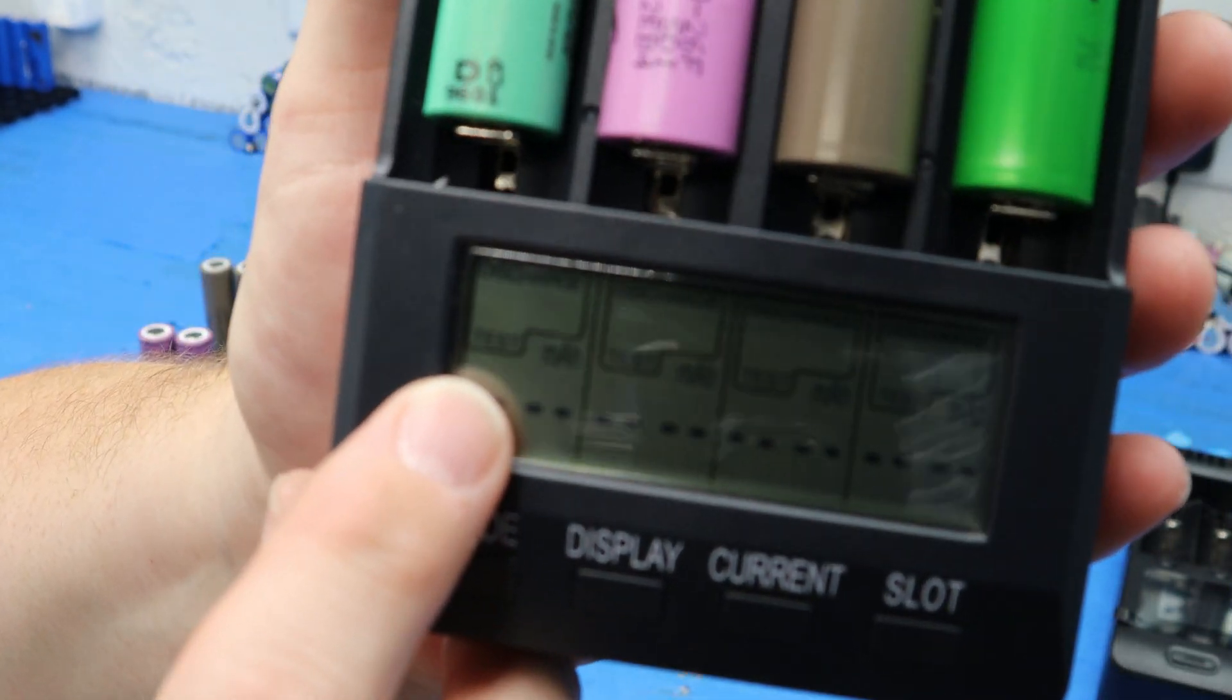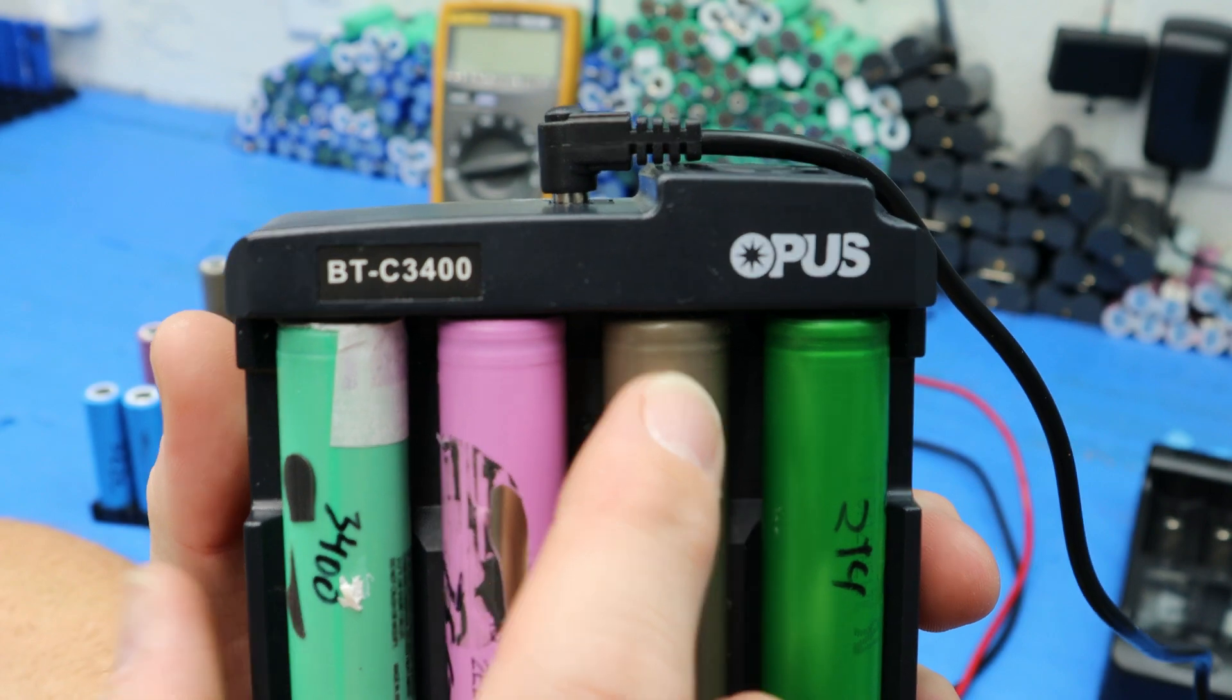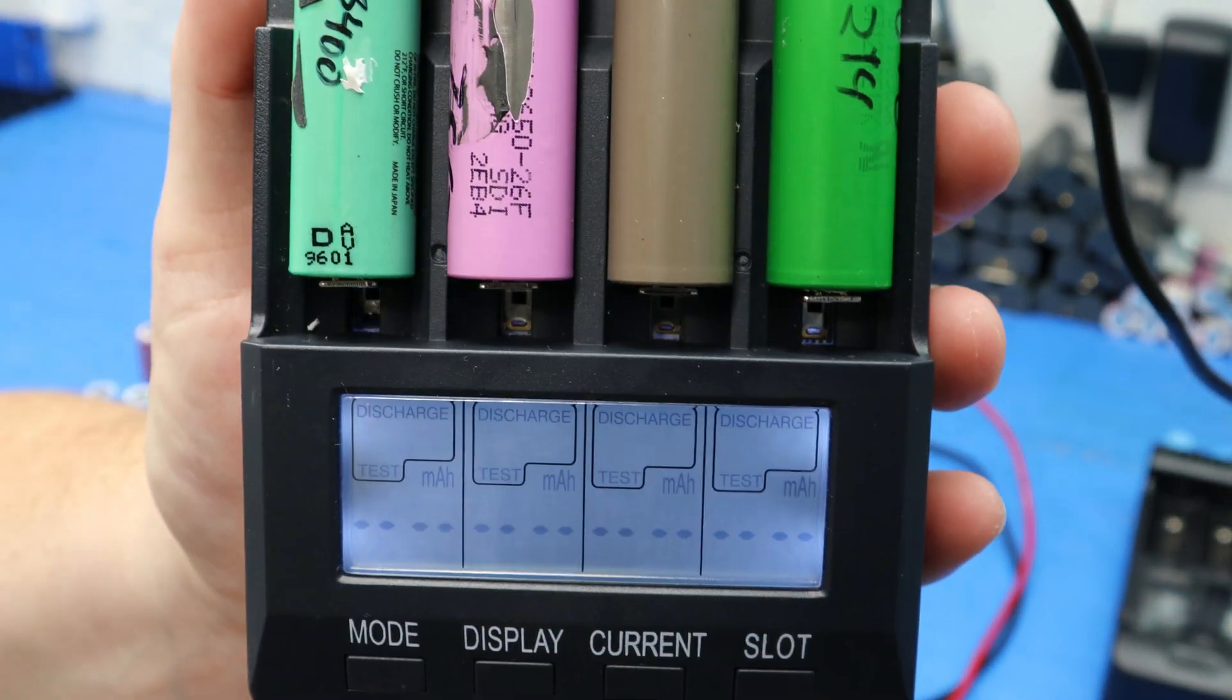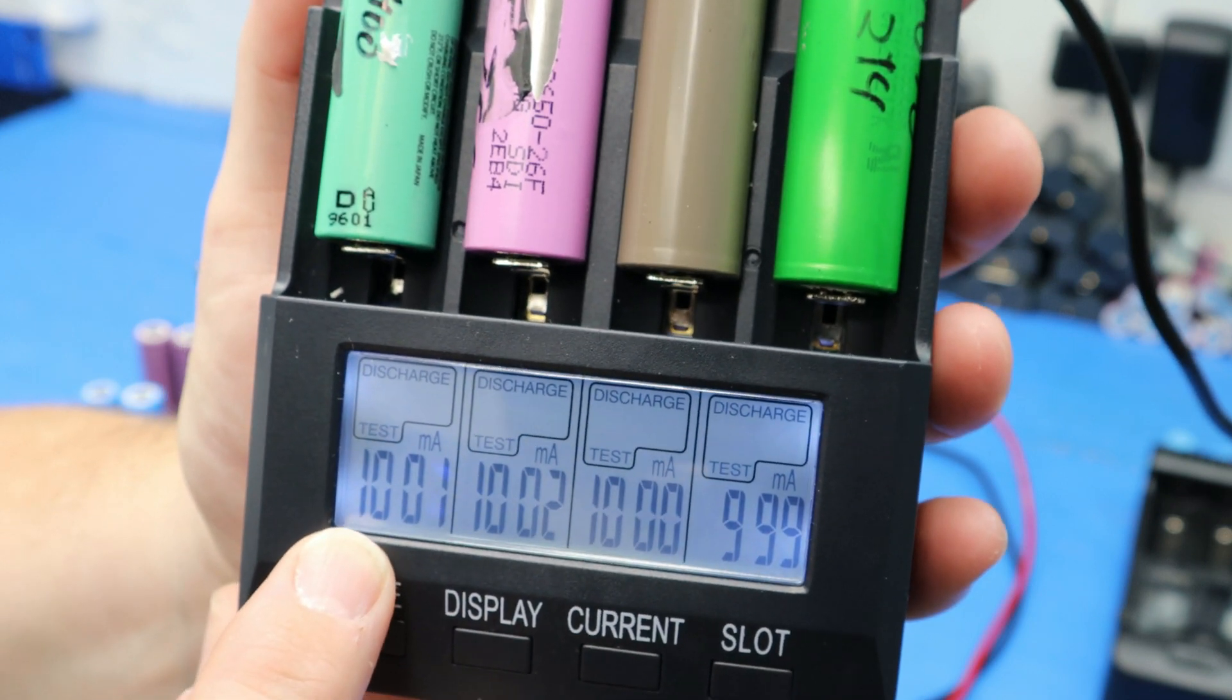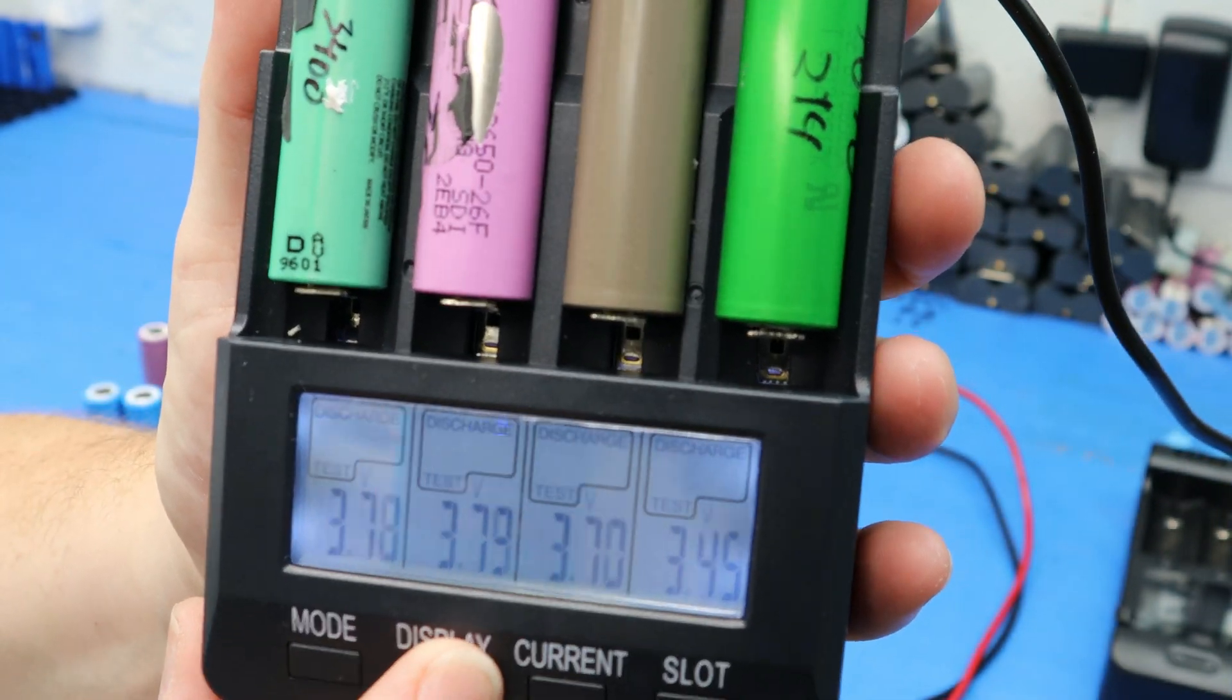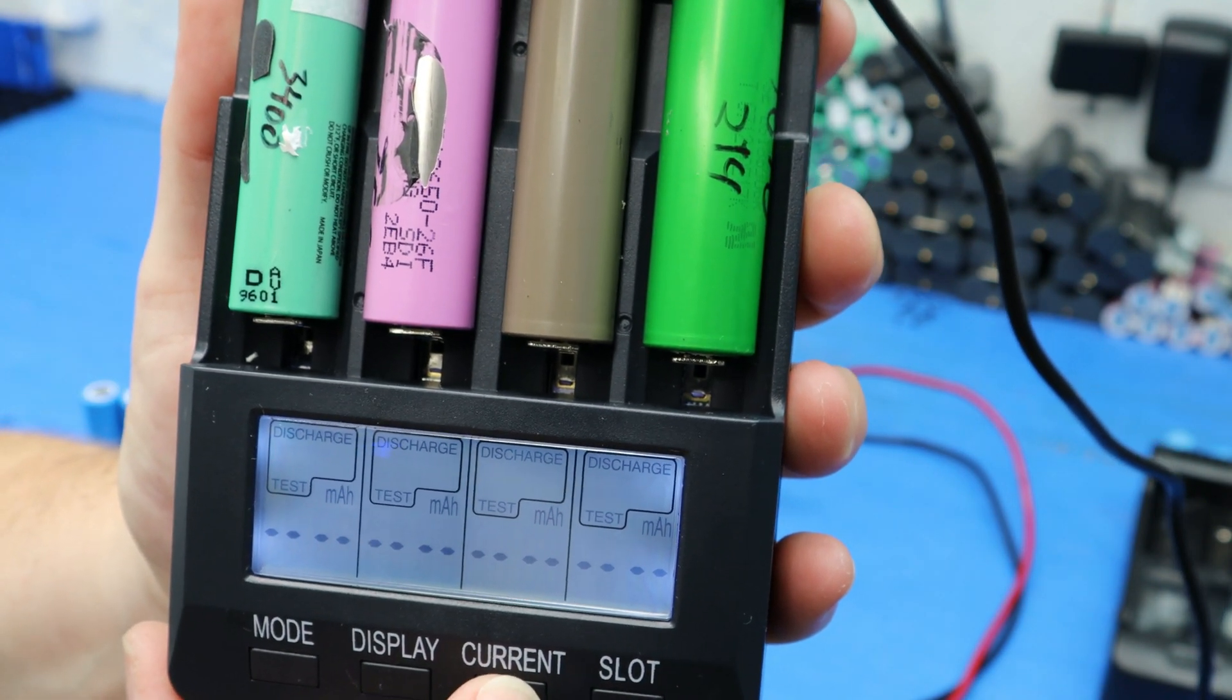But if you set your Opus up on discharge test when you put your cells in, make sure that your positive points up. You can tell where the positive is by the little lip ring on all of the cells. Make sure that you run the Opus on discharge test. What it will do is it will charge up your batteries first, and then it will run a discharge. Now the current I have it set at is 1000 milliamp. This current setup has been running for an hour and 39 minutes at 1000 milliamps.